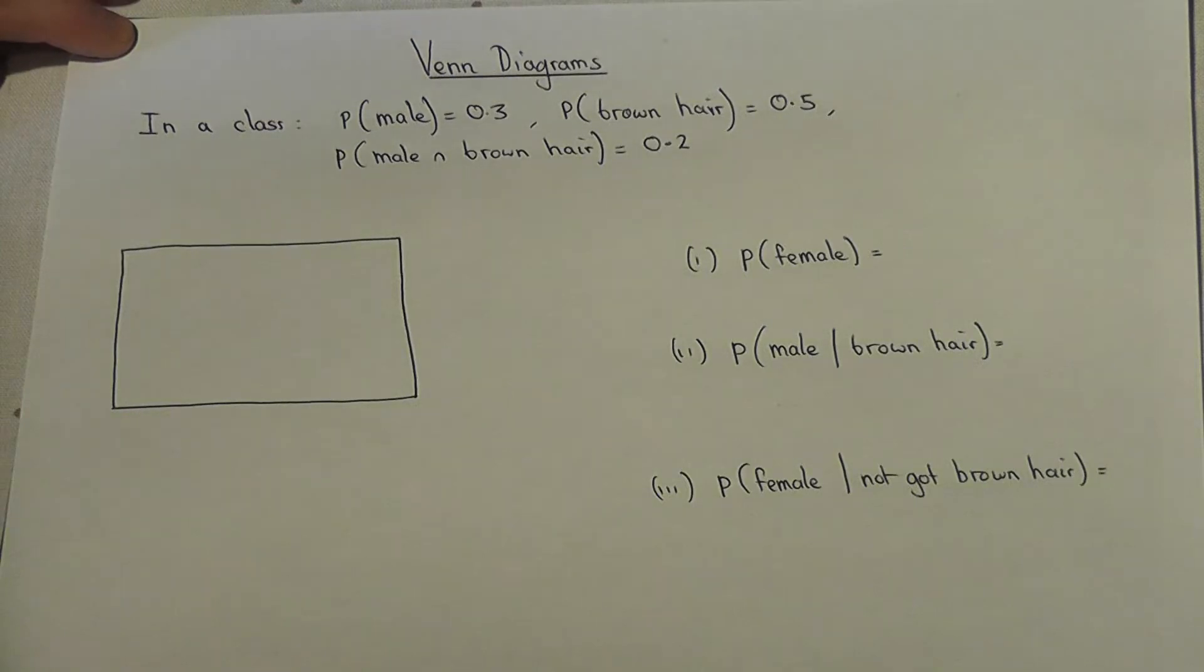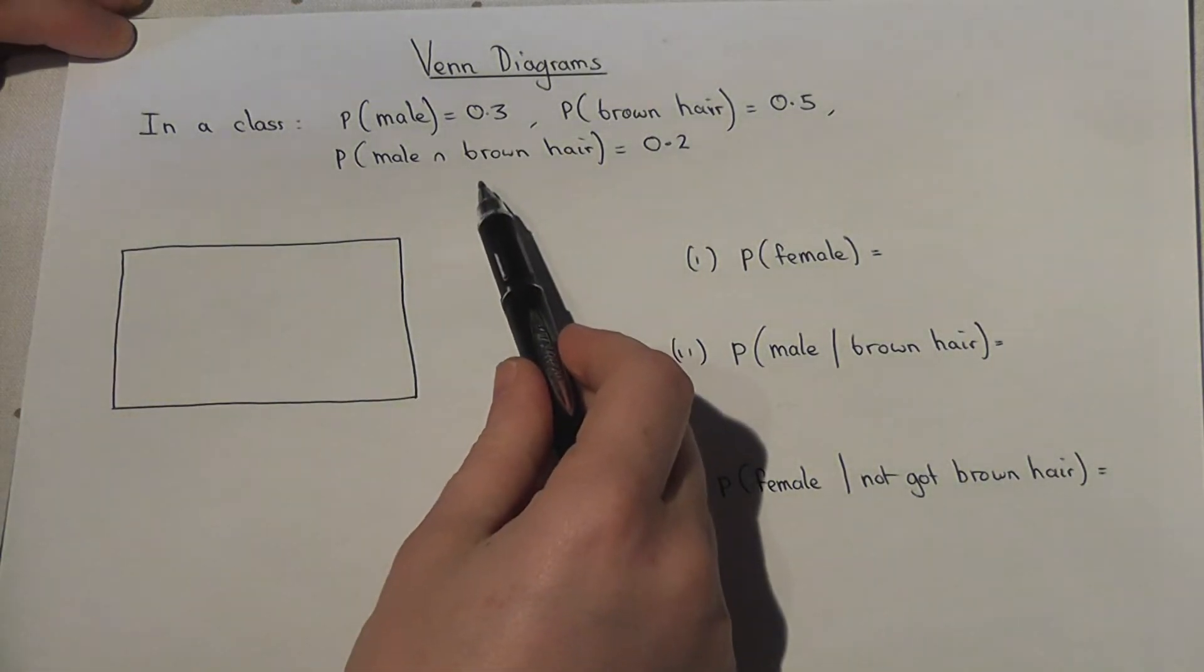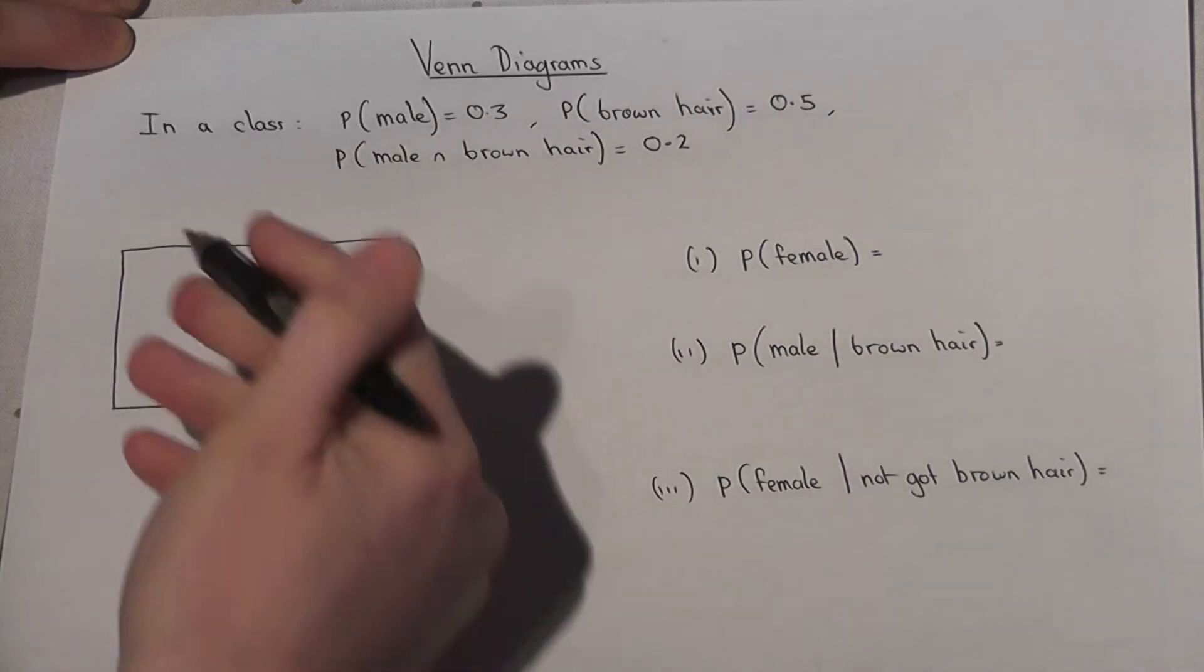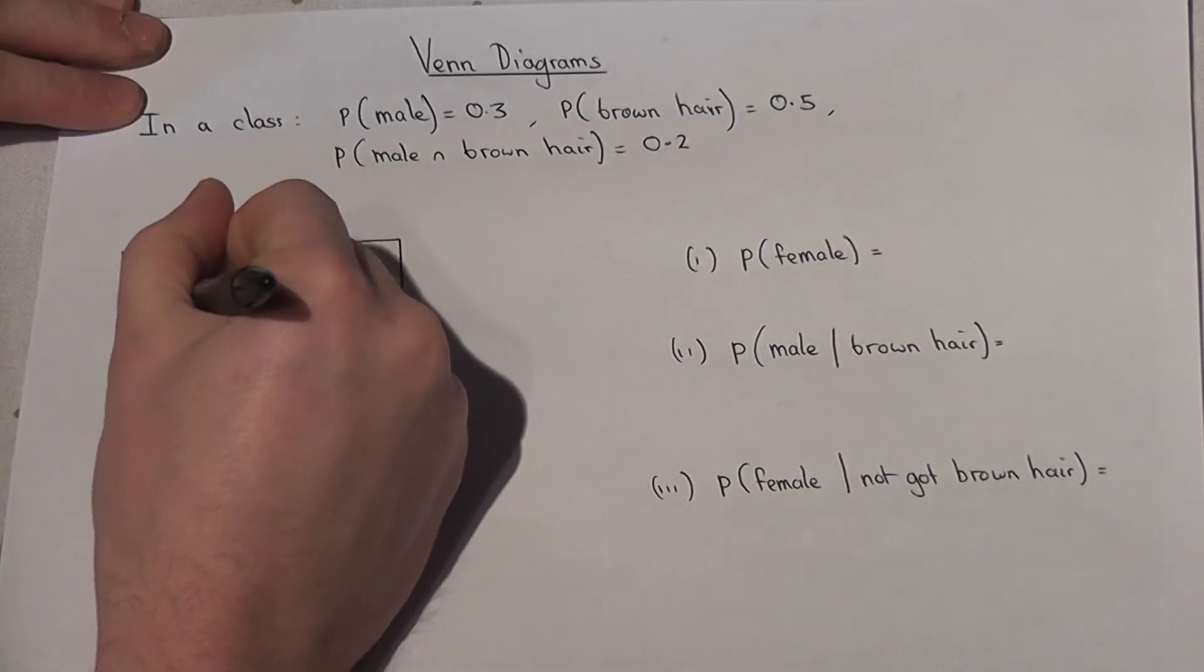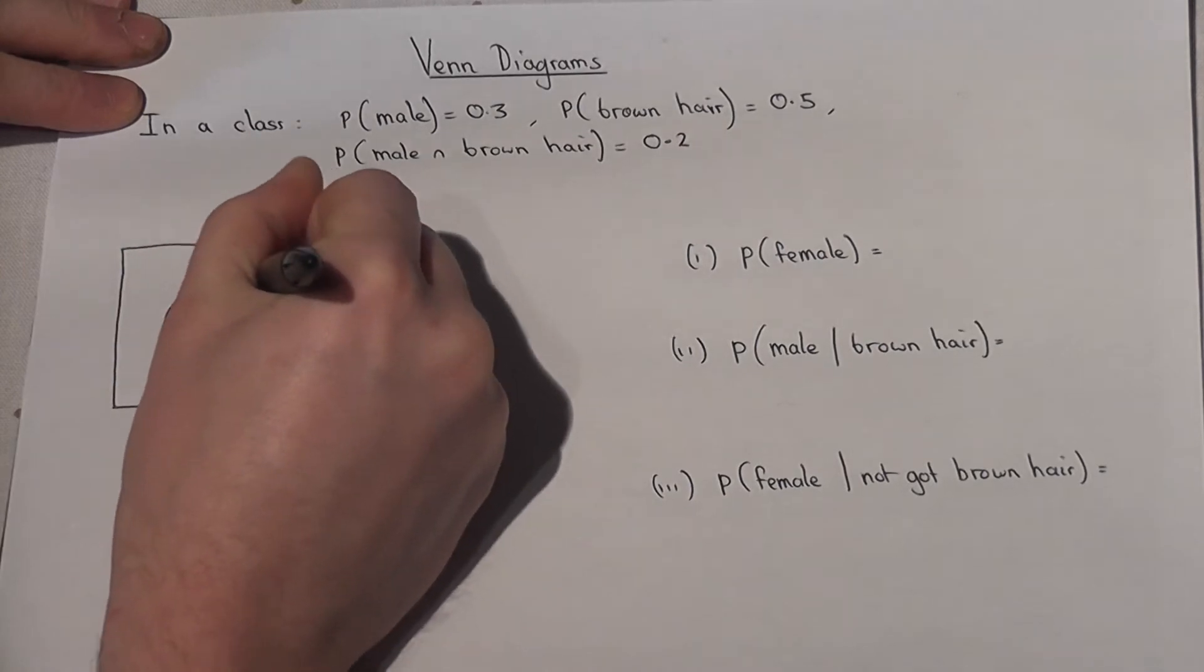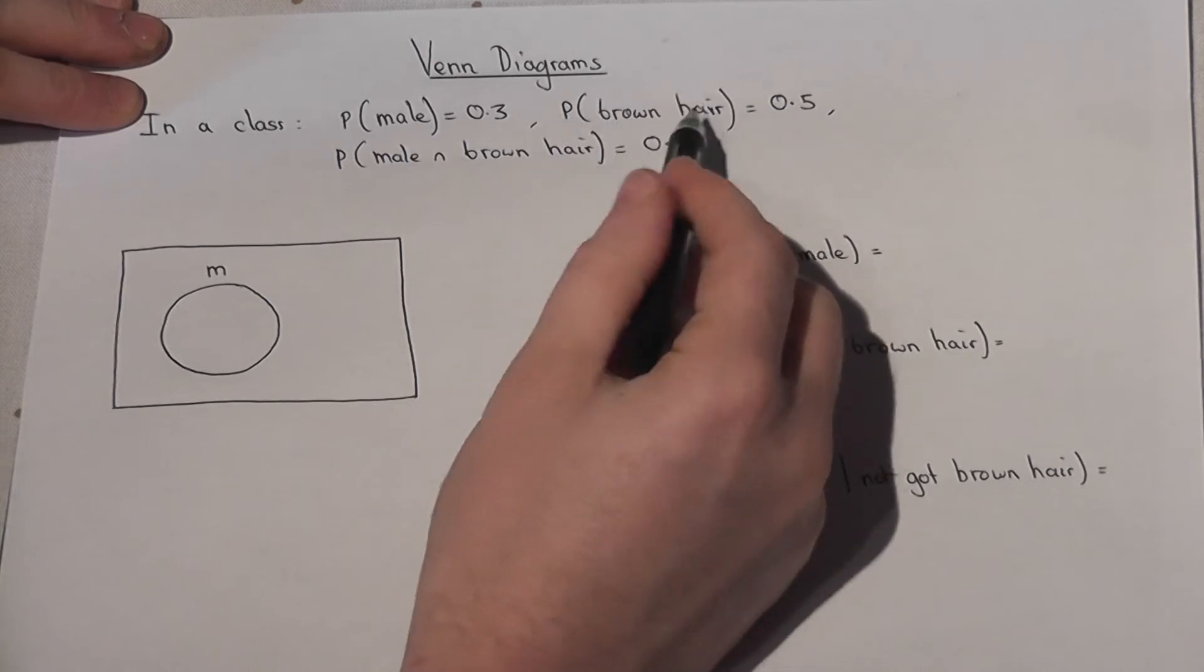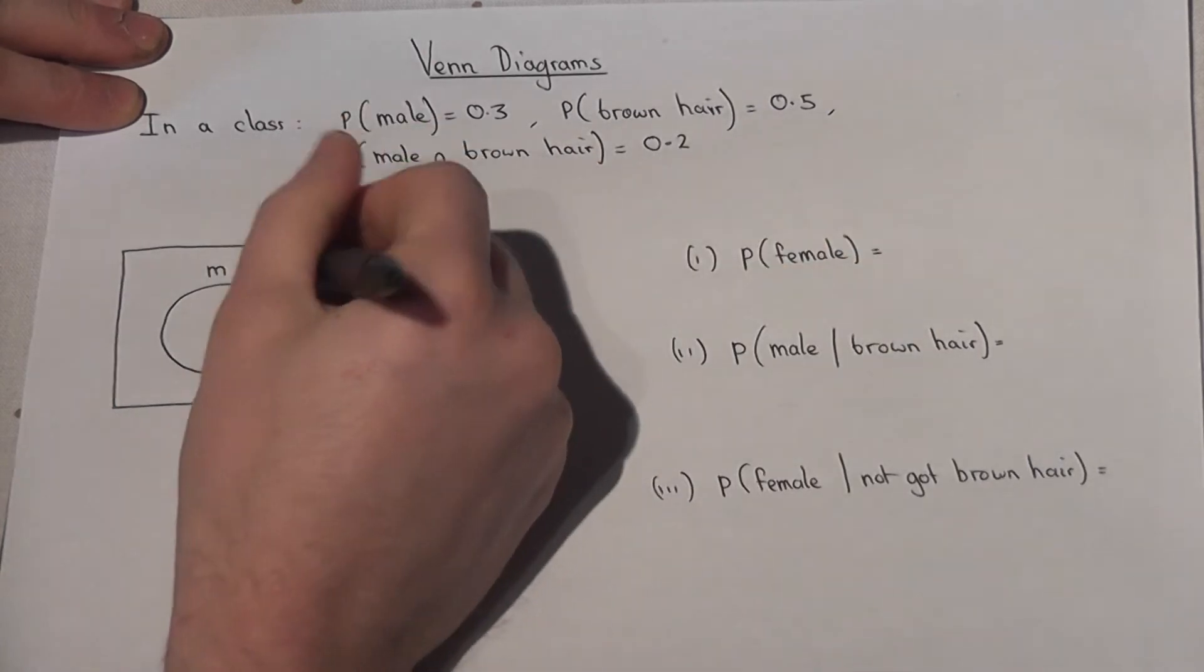A Venn diagram can be used to represent certain situations. Now in a class we're told the chance of being male is 0.3, so I can draw a circle to represent the male part of the class. We're also told about brown hair which is 0.5, so I can draw a circle to also represent the people with brown hair in the class as well.